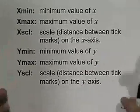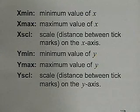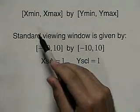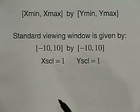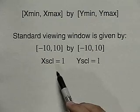Since the Cartesian coordinate plane extends infinitely in all directions, we can only look at a portion of it at a time. The same is true when using a graphing calculator. We call the portion of the plane that we're looking at the viewing window. We'll use the following abbreviations: x-min for the minimum value of x, x-max for the maximum value of x, x-scale for the distance between tick marks on the x-axis, y-min for the minimum value of y, y-max for the maximum value of y, and y-scale for the distance between tick marks on the y-axis. Our standard viewing window is negative 10 to 10 on the x-axis and negative 10 to 10 on the y-axis, with an x-scale of 1 and a y-scale of 1.